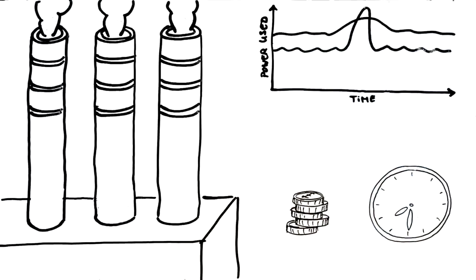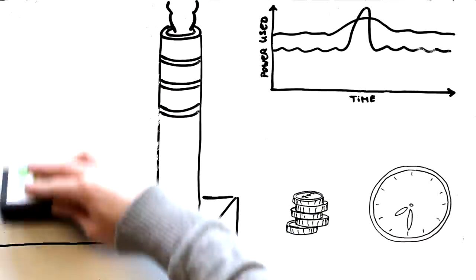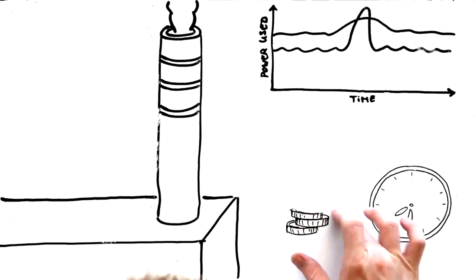This is called peak levelling and will help power companies shape demand and avoid spikes where everyone uses lots of electricity at the same time. This means the extra generators will not be needed, making power production more efficient. This is better for the environment and will bring the cost of electricity down.